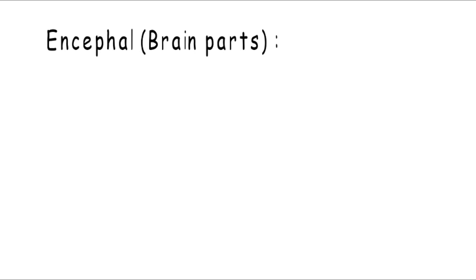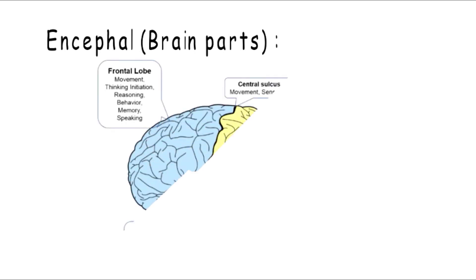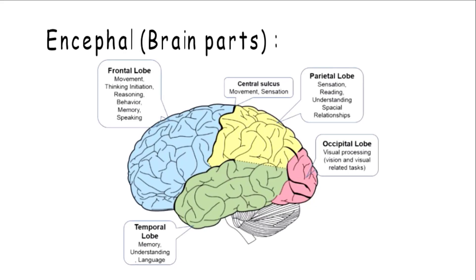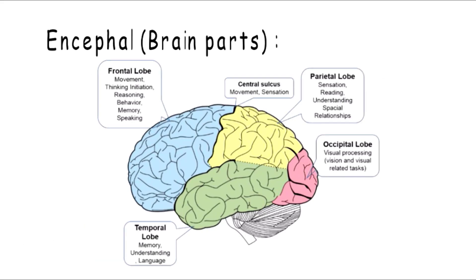Moving on to the next segment of the EEG, that is encephal, in which we will discuss the brain parts through which the electrical signals are supposed to be extracted. These parts are frontal, parietal, temporal, and occipital lobes.